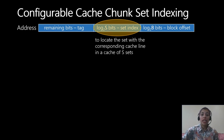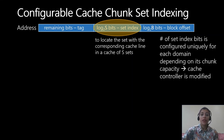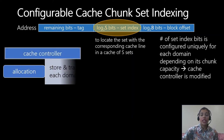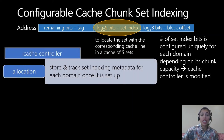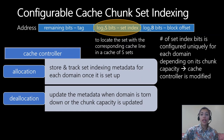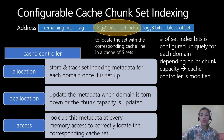Because each domain is allocated a chunk with a different number of sets, the number of address bits used to map a memory address to the correct set is no longer fixed — it must be configured independently per domain. The cache controller must be extended with additional logic and finite state machines to control cache allocation operations when a new domain is set up, when a domain is torn down, and to manage every cache access correctly for each domain.